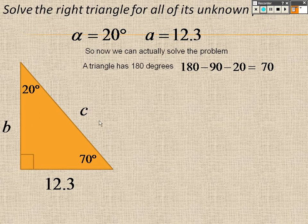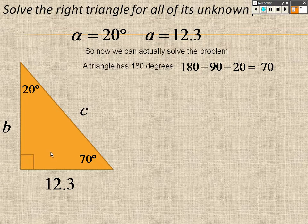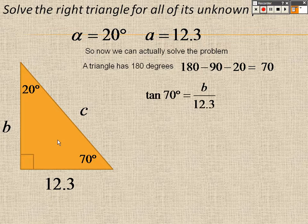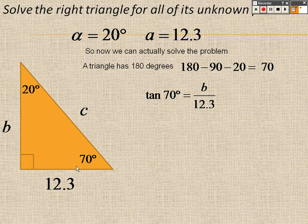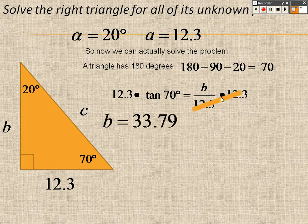So all I need to do is find the missing sides, and now that I know every angle, I can use SOHCAHTOA - sine, cosine, and tangent - to figure this out. I'm going to do tangent. Tangent of 70, opposite is b over adjacent, which is 12.3.